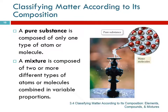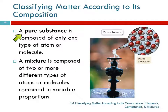Another way to classify matter is by its composition, what it's made out of. We can divide matter into pure substances and mixtures. In a pure substance, there's only one type of atom or molecule. They're all going to be the same in the whole substance.